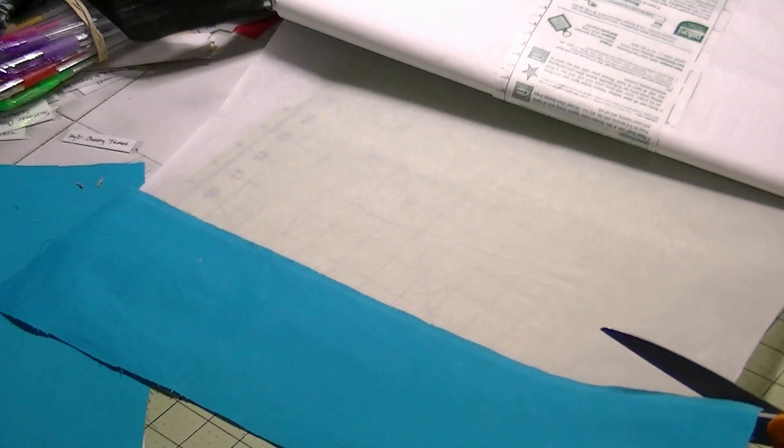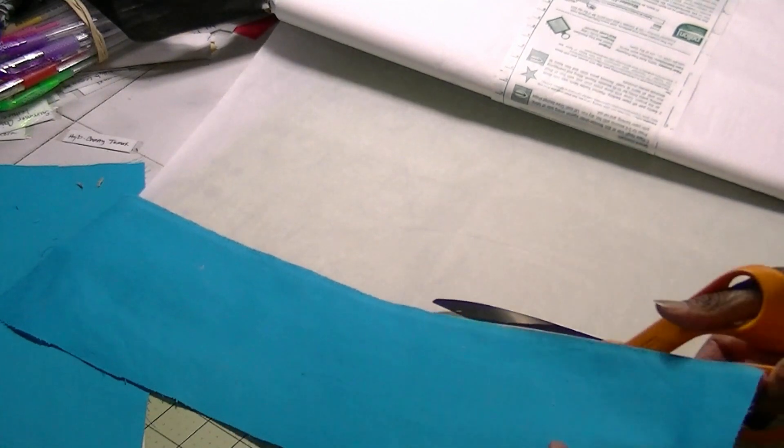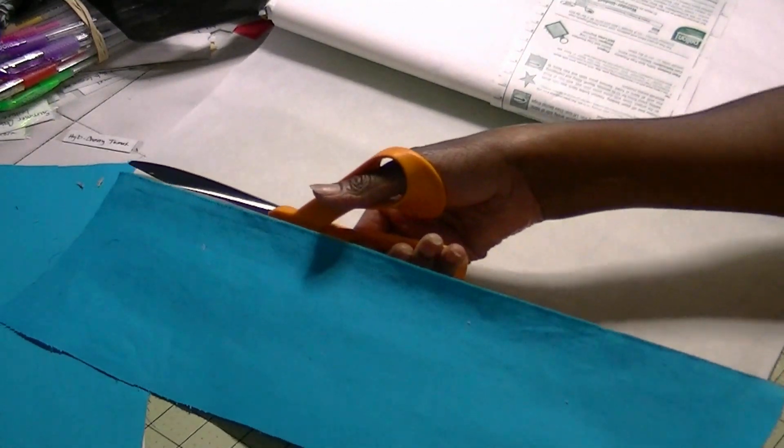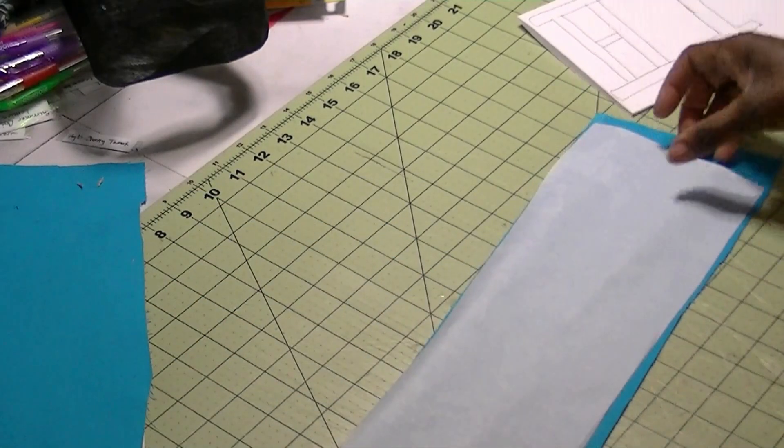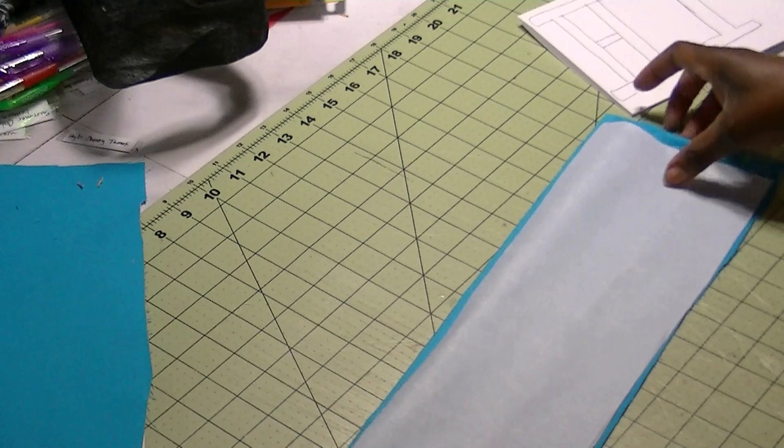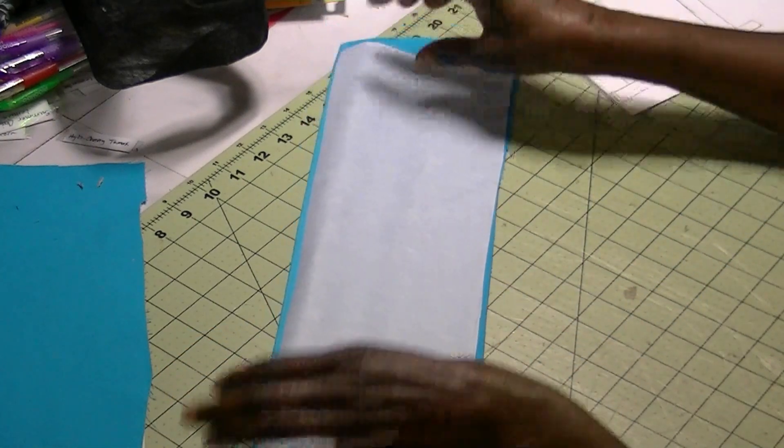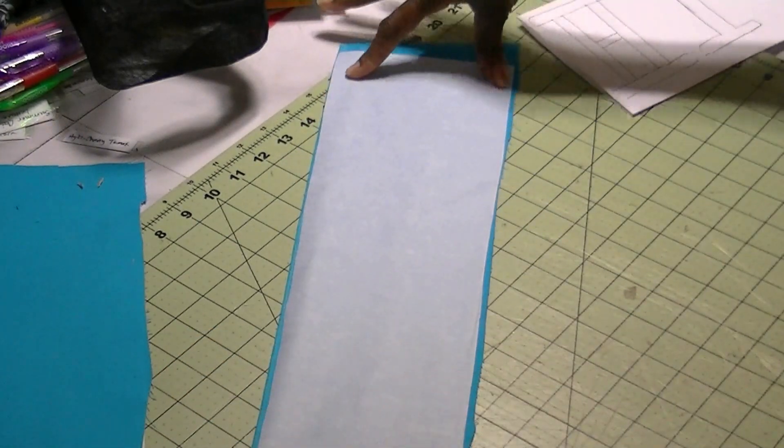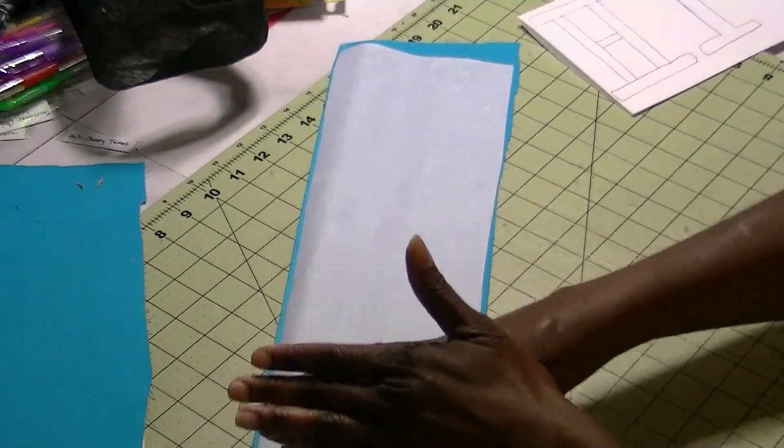So I left a little bit on the edge so that way when I cut it, I can cut it right to the edge. Now as you can see, I have the Pell-On on the fabric, but as you notice,